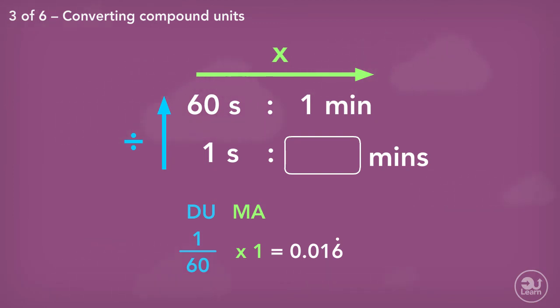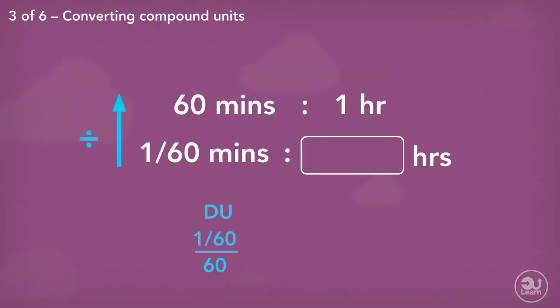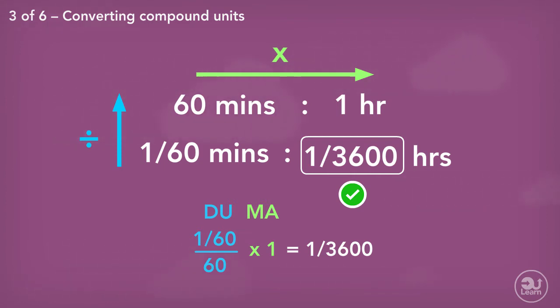But for simplicity, I will leave the answer as a fraction, 1 over 60. Next, we divide up, multiply across again. 1 over 60 divided by 60 times by 1 equals 1 over 3,600.